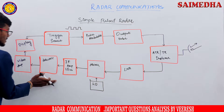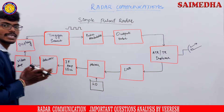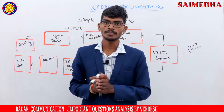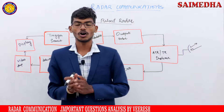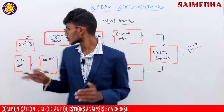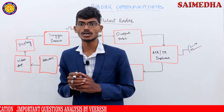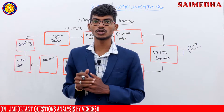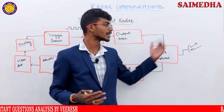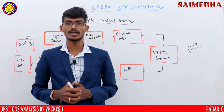After the receiver, we have a display. This display is used to show the characteristics of the pulses we have sent and the pulses which are received back from the target.